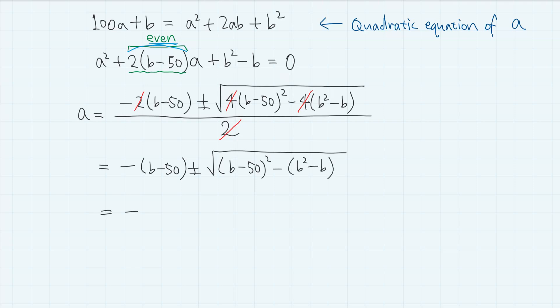And if we expand, then we have b squared minus 100b plus 2500 minus b squared plus b. So this b squared nicely gets cancelled out. So we have minus (b minus 50) plus minus square root of 2500 minus 99b.